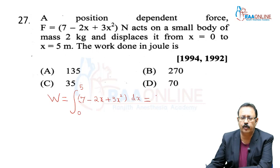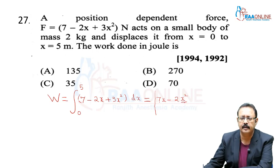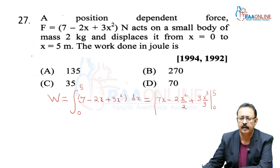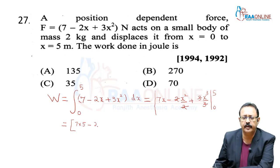Integration of the force function (7 − 2x + 3x²) dx from 0 to 5 gives [7x − x² + x³] evaluated from 0 to 5. Putting x = 5: 7×5 − 5² + 5³ = 35 − 25 + 125 = 135.